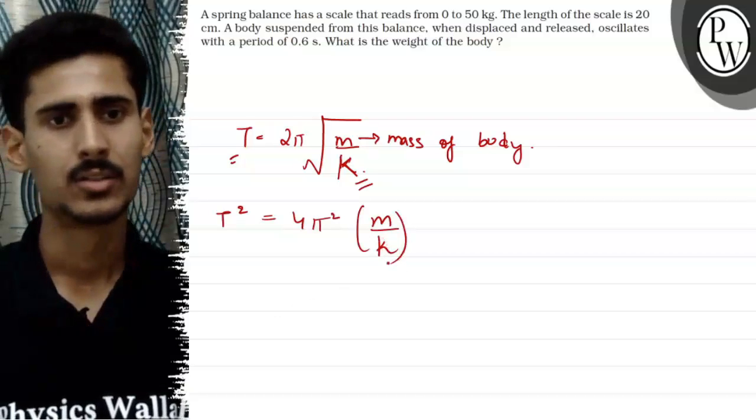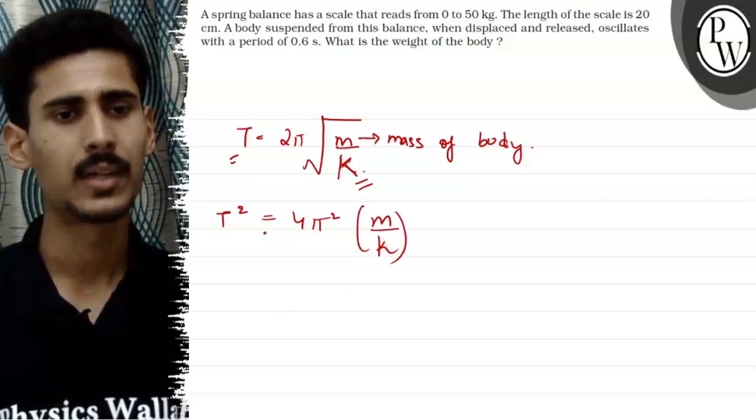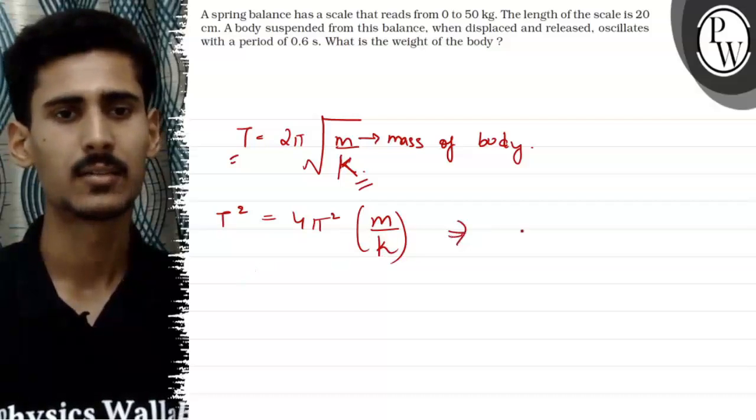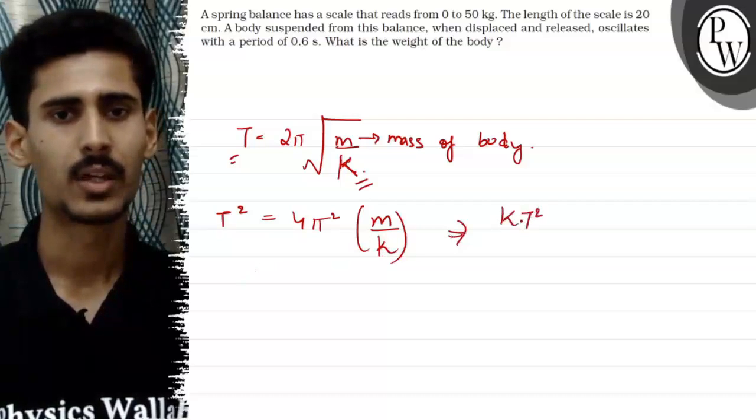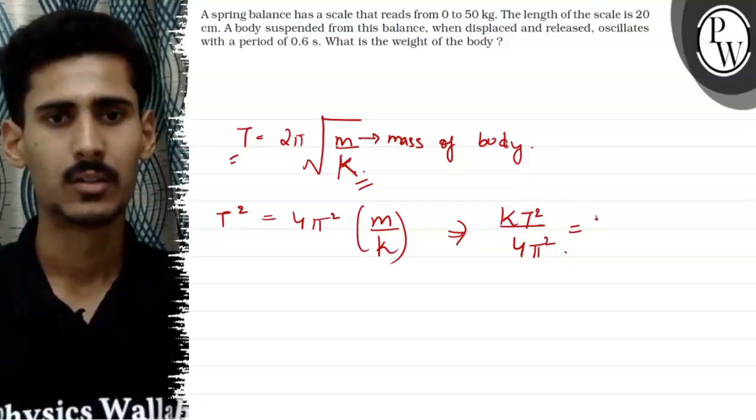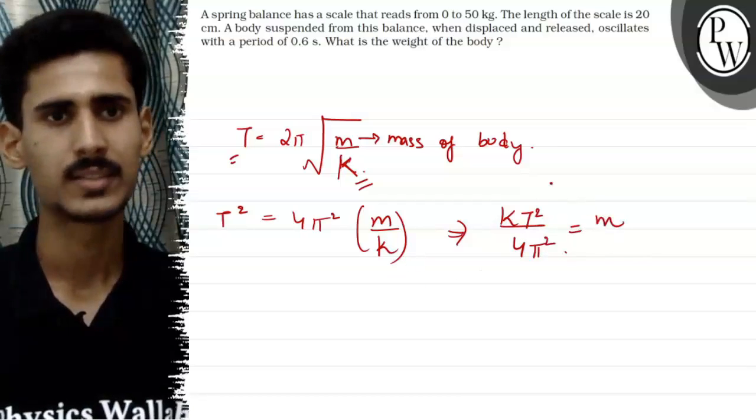If we square this equation both sides, our T square equals to 4 pi square m over K. So taking K and 4 pi square on the other side of the equation, we will get KT square upon 4 pi square, this will be our small m. That is the mass of the body.